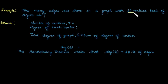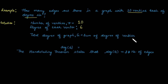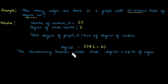Let's take another example: how many edges are there in a graph with 10 vertices each of degree 6? It is given that the total number of vertices is 10 and the degree of each vertex is 6. The degree of graph G equals the sum of degrees of all vertices, so the total degree equals 10 × 6 = 60.